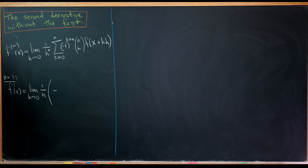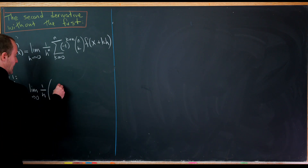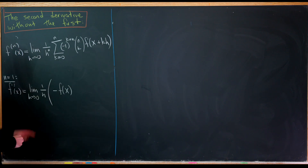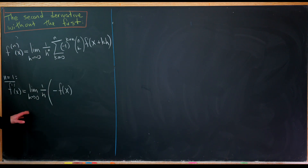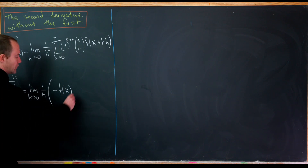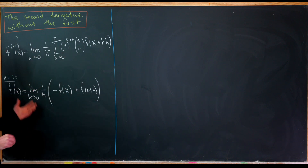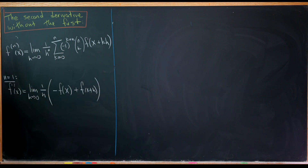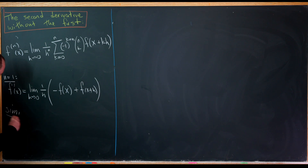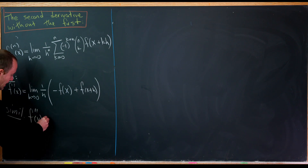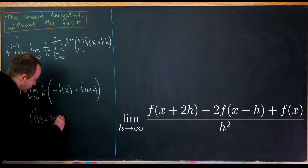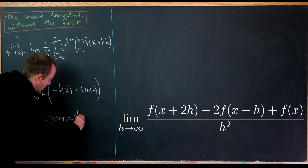Now for the general formula: the nth derivative of f equals the limit as h → 0 of (1/h^n) times the sum from k = 0 to n of (−1)^(k+n)·(n choose k)·f(x + kh). For n = 1, this gives (1/h)·[−f(x) + f(x + h)], which is exactly the standard limit definition of the first derivative.